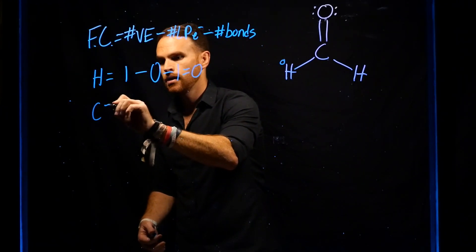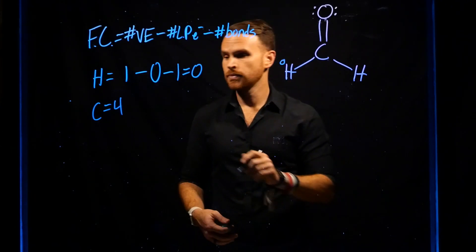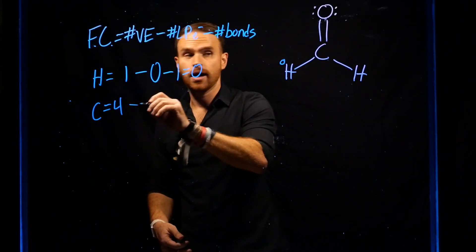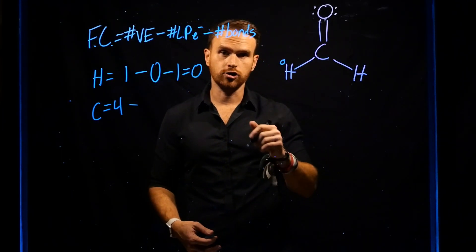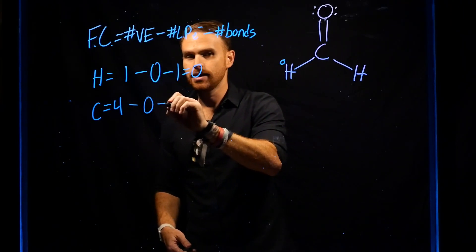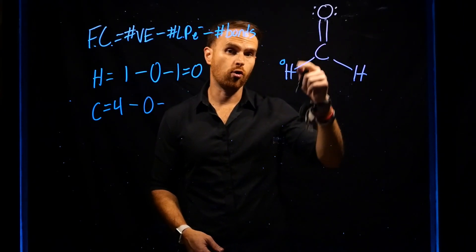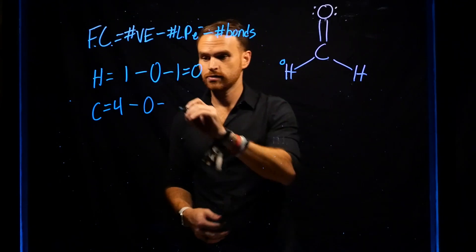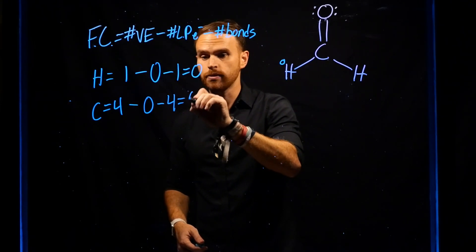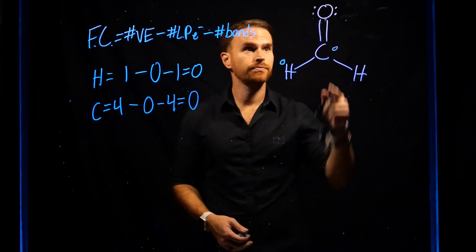Similarly, carbon has four valence electrons. It is surrounded by no lone pairs of electrons, and it is surrounded by one, two, three, four bonds. This means that carbon also has a formal charge of zero.